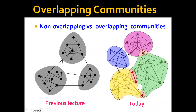You may have noticed that in the previous lecture, what we were focusing on is actually non-overlapping communities. In that case, it's relatively easy because you can pose the problem as a graph cut problem and try to find the optimal cut to split the graph into several communities. But in today's lecture, we're mostly focused on overlapping communities, and as you can see, things can get more complicated here.